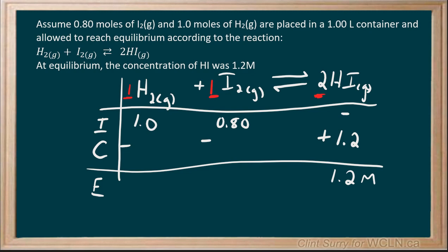Now going backwards from that, we can see that we had a 1.2 molar change in hydrogen iodide. That's twice as much as the others. So we can assume that this is half as much at 0.60 to get the change that occurred for hydrogen and iodine.